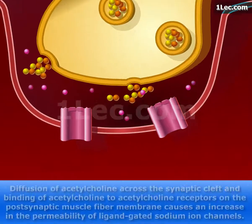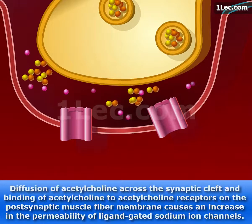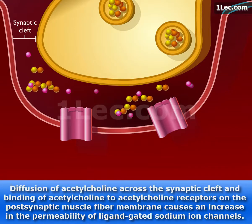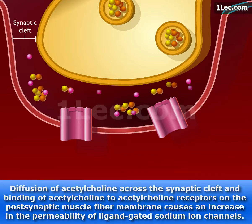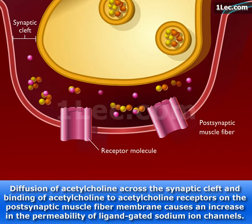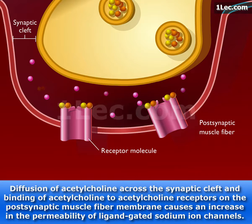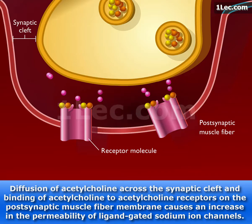Diffusion of acetylcholine across the synaptic cleft and binding of acetylcholine to acetylcholine receptors on the postsynaptic muscle fiber membrane causes an increase in the permeability of ligand-gated sodium ion channels.